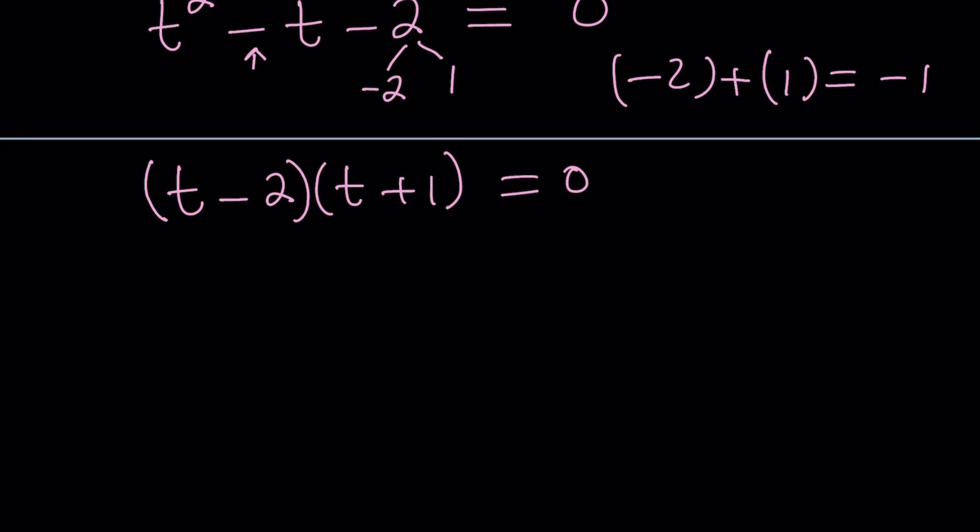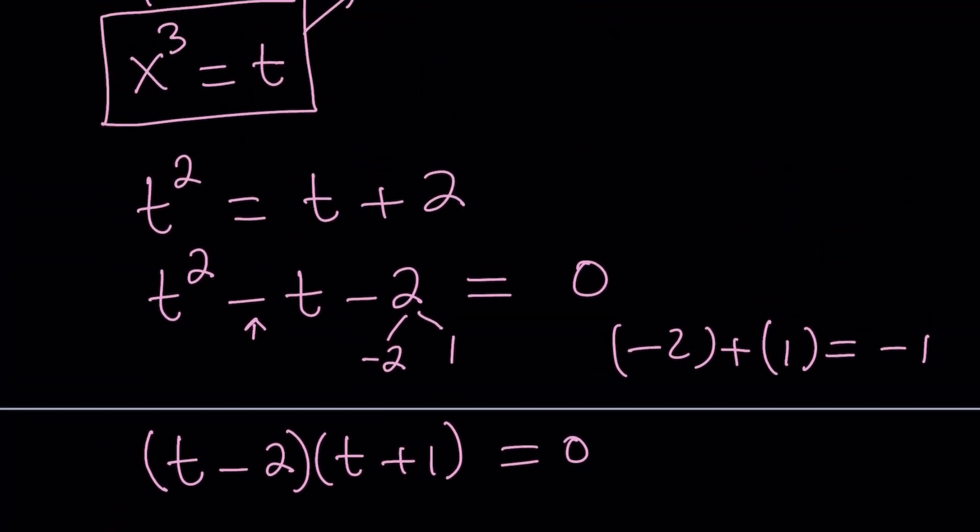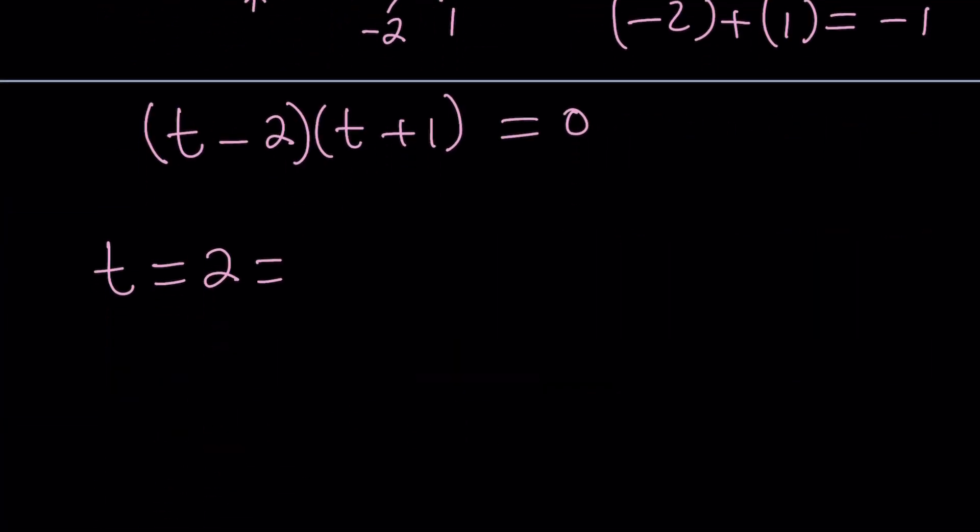So now, first factor gives us t equals 2, and t is what? X cubed. So let's set it equal to x cubed. Now, from here, we seem to be getting a single real solution. So x equals cube root of 2 is a solution. But what about the other solutions? Well, we have to look at it in the complex world. So let's go to the complex world and see what happens.